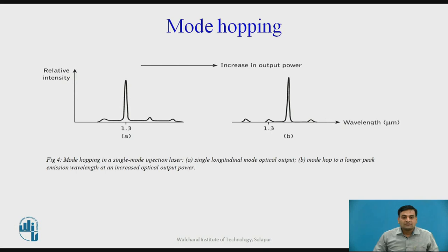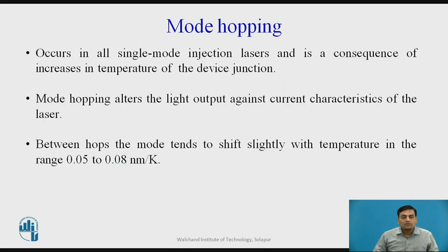The next characteristic is mode hopping. Figure 4a shows the single longitudinal mode output spectrum of a single-mode laser, while Figure 4b demonstrates mode hopping to a longer wavelength as the current is increased above threshold. Mode hopping behavior occurs in all single-mode injection lasers and is a consequence of an increase in temperature of the device junction.